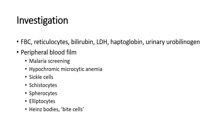The peripheral blood film plays an important role in diagnosing the cause of hemolytic anemia — we look at the morphology of the cells. Hypochromic microcytic anemia on full blood count may suggest thalassemia. Sickle cells suggest sickle cell anemia. Schistocytes suggest microangiopathic hemolytic anemia. Spherocytes suggest hereditary spherocytosis or autoimmune hemolytic anemia. Elliptocytes suggest hereditary elliptocytosis. Heinz bodies and bite cells are typical findings in G6PD deficiency.